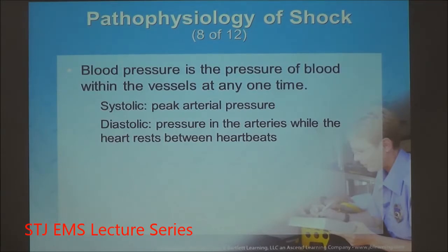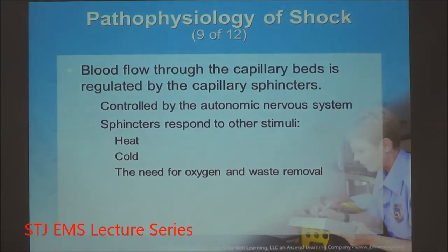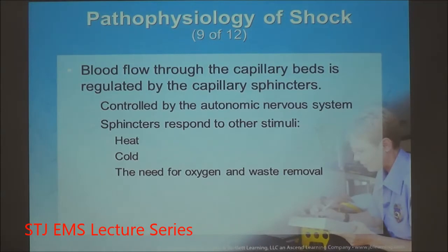For the system to work, it must be under constant pressure. Systolic pressure is the peak arterial pressure caused by contraction of the left ventricle pumping out blood. Diastolic pressure is the resting pressure. To get blood down into the capillary beds, this pressure must be regulated. The body regulates blood pressure without conscious effort through the autonomic nervous system.